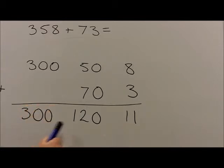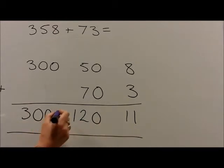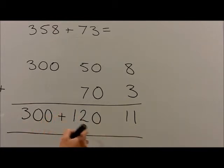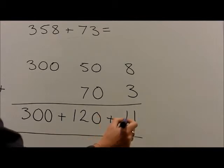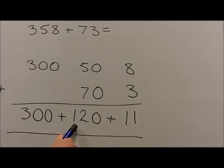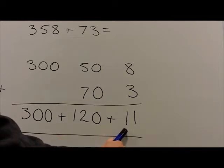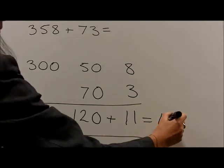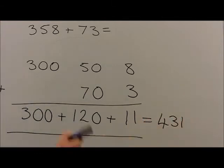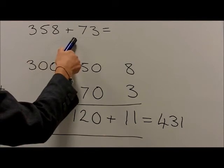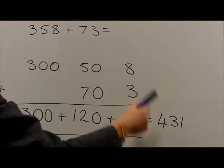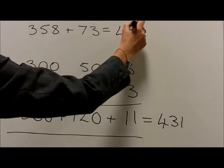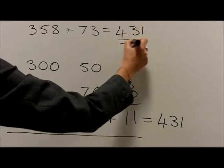The separate partitions are then added back up, so 300 plus 120 plus 11 is 300 plus 120 is 420, plus 11 is 431. Therefore, 358 plus 73 equals 431, the final answer.